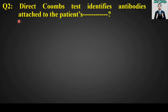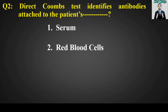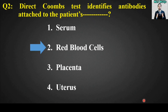MCQ number two: The direct Coombs test identifies antibodies attached to the patient's blank. Options: serum, red blood cells, placenta, or uterus. The right answer is option number two — red blood cells. The direct Coombs test identifies antibodies attached to the patient's red blood cells.